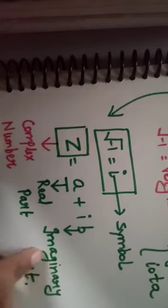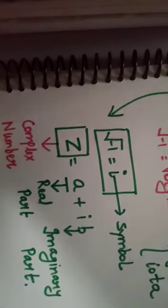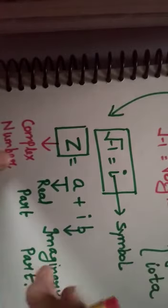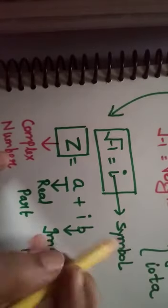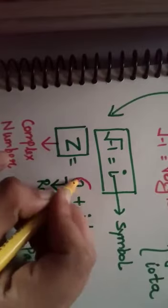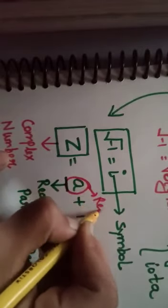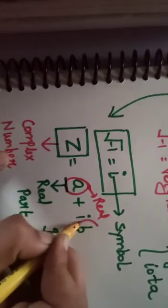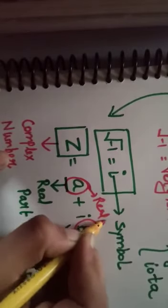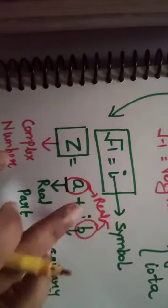Lekin agar koi aapse number ki type poochta hai, koi aapse poochta hai ki a kaisa number hai, to a is a real number. B kaisa number hai? B bhi real number hai. A aur b dono real numbers hai.